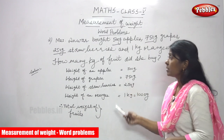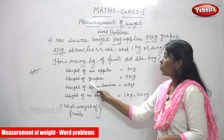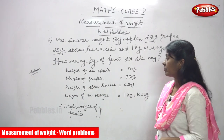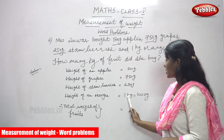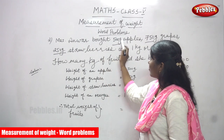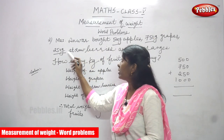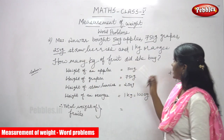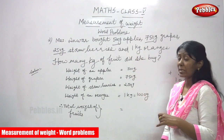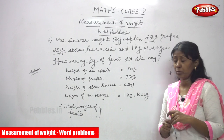Look at this: weight of apples is 500 grams, weight of grapes is 750 grams, weight of strawberries is 250 grams, and weight of oranges is 1 kilogram. All the fruits are given in grams, but only the oranges are given in kilograms.